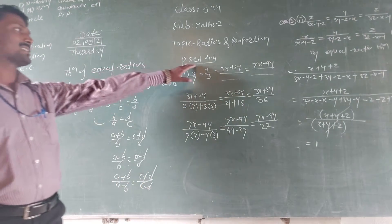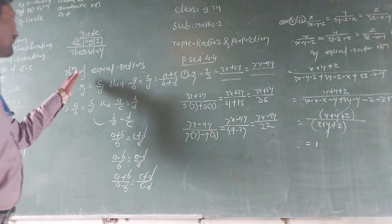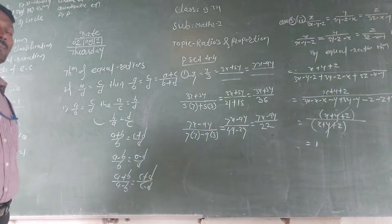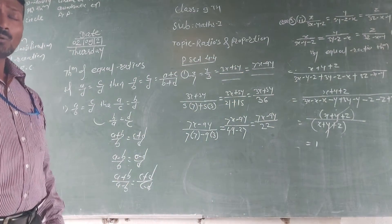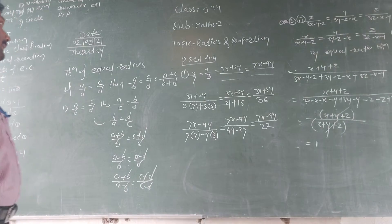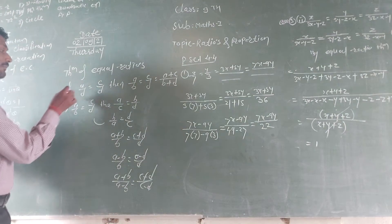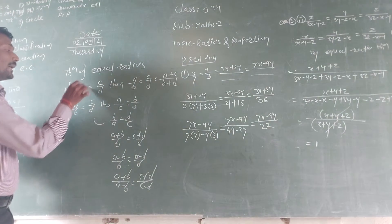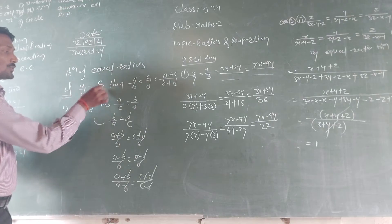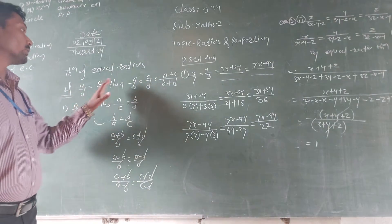In the next step, in practice state number 4.4, we have to recognize the theorem of the equal ratio. What condition applies for this theorem of the equal ratio? This theorem of the equal ratio — if a upon b is equal to c upon d, this is the basic equal ratio.